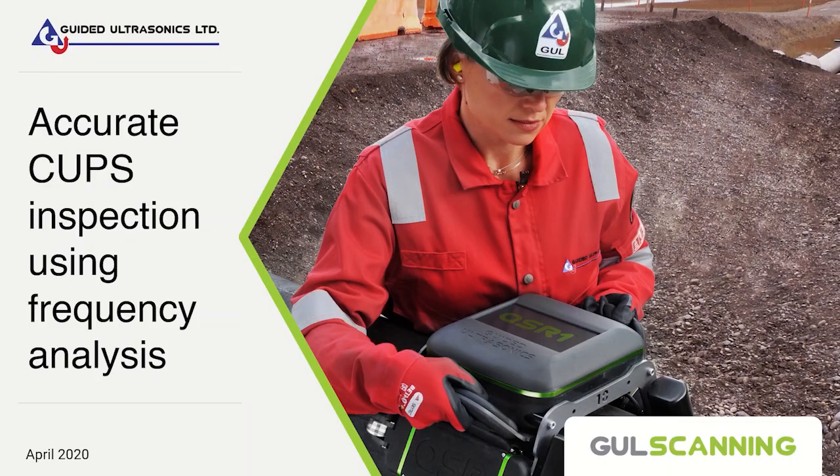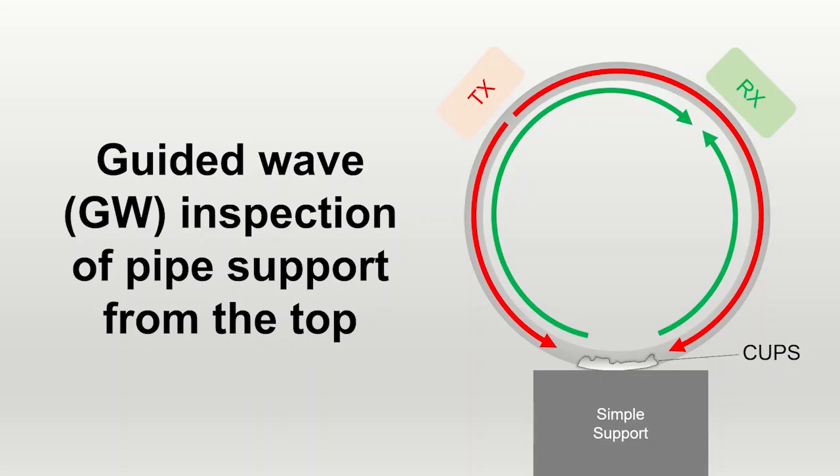In this video, we will explore how GUL scanning improves CUPS inspection using a frequency-based signal processing method. Generally, guided-wave inspection of pipe supports from the top can be used to inspect for CUPS.